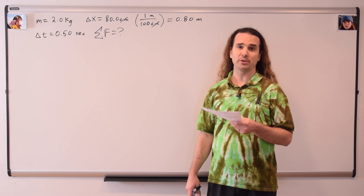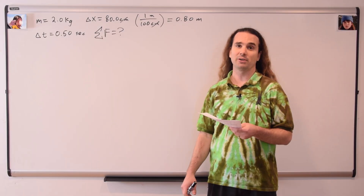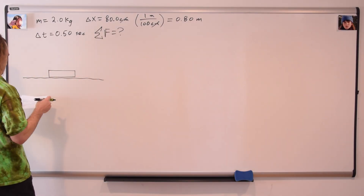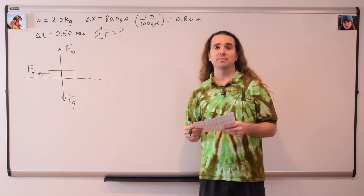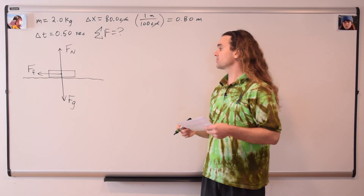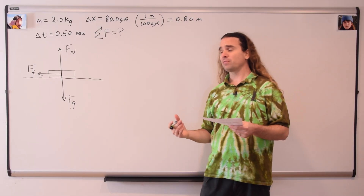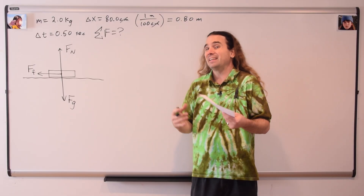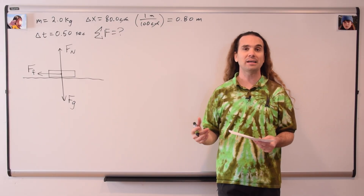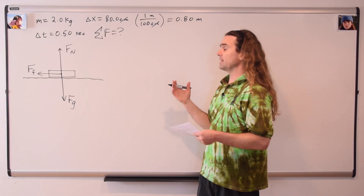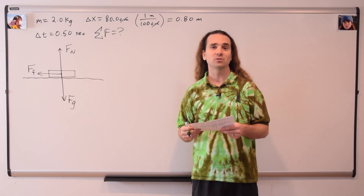Next, we should draw the free body diagram, because this is a problem that deals with forces. The force normal is always normal to the surface — it pushes up, perpendicular to the surface. The force of gravity is always straight down. We know there is a force of friction because the mass is sliding to a stop, so it is accelerating in the x direction, meaning there must be some force causing it to slow down — that is the force of friction. Because it's sliding to the right, the force of friction opposes that motion, so it acts to the left.